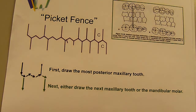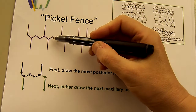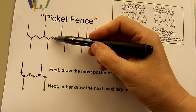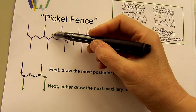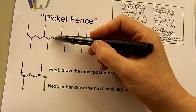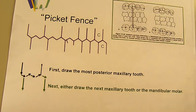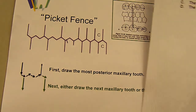Or if we know the picket fence, we can think in terms of the distal buccal cusp of the mandibular second molar, and the central fossa of the maxillary second molar would be where it resides.